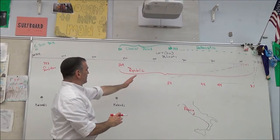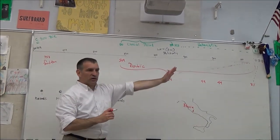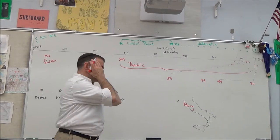So that's the Roman Republic, from 509 to 31 BC, so roughly 500 years.